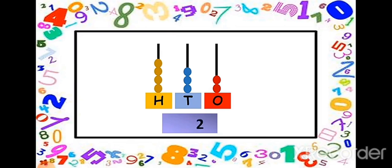How many beads are here in the tens place? Count: one, two, three. Write three. And in the hundreds spike, how many beads are here? One, two, three, four. So we will write four. So the number has four hundreds, three tens and two ones. Thus the number shown on the abacus is four hundred thirty-two. I hope now you have understood how to read the number from an abacus.